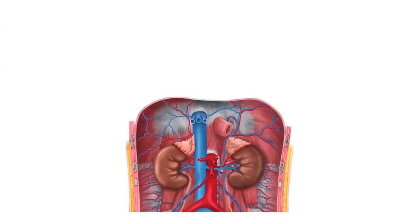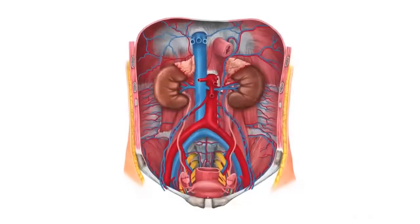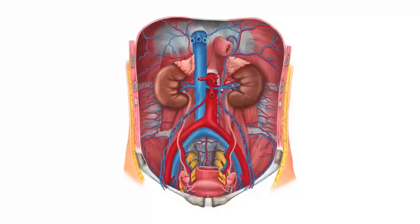Hello everyone, this is Juan from Kenhub and welcome to another anatomy tutorial where this time I'm going to be talking about the renal arteries, these blood vessels that supply two organs in your body, the kidneys, as you can now see on the image.